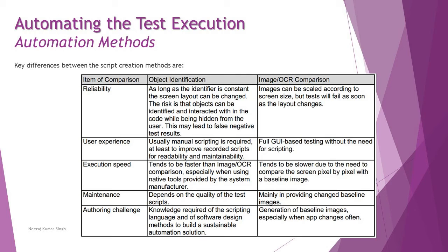Regarding reliability for object identification: as long as the identifier is constant, the screen layout can be changed. However, the risk is that the object can be identified and interacted with in the code while being hidden from the user. This may lead to false negative test results — where the object has no visibility and the result appears correct but something has gone wrong.